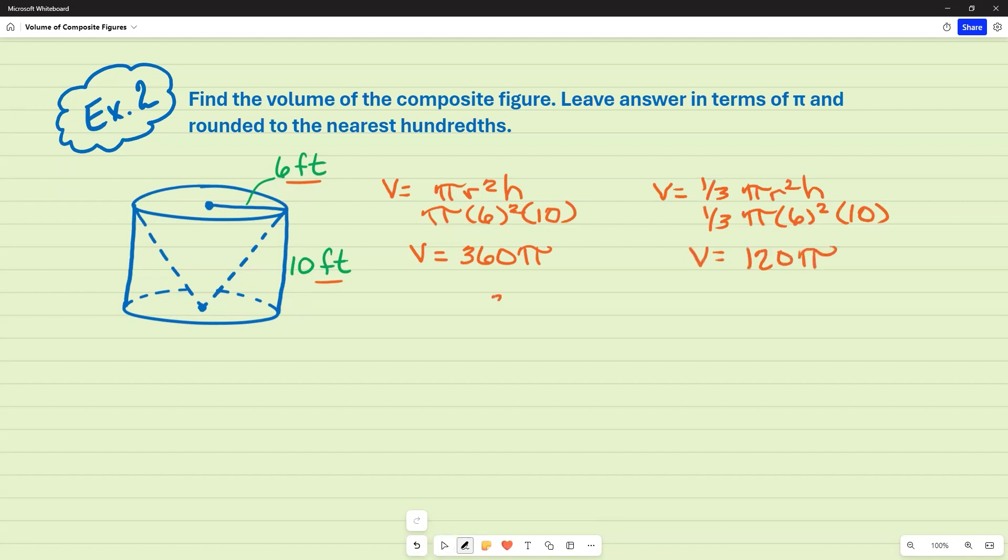Now, since I have a shape within a shape, I have to subtract the two. So 360 pi minus 120 pi gives me 240 pi. So when it says leave the answer in terms of pi, that's one of my answers.